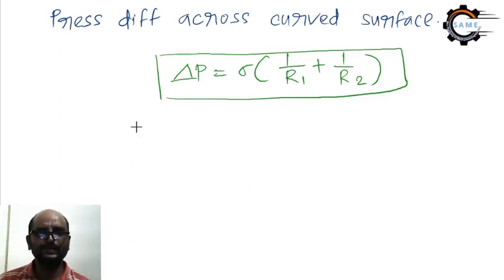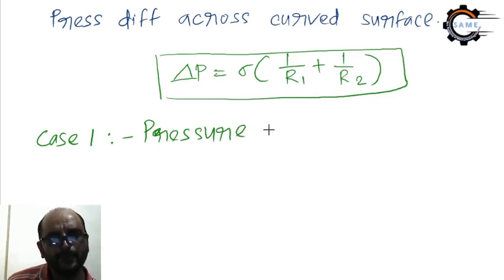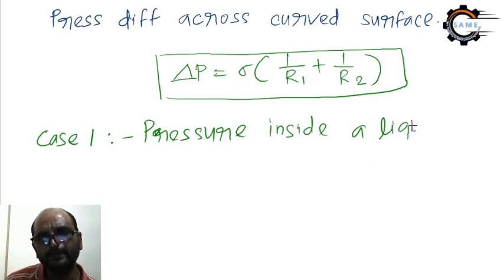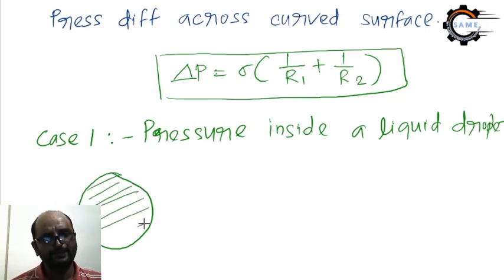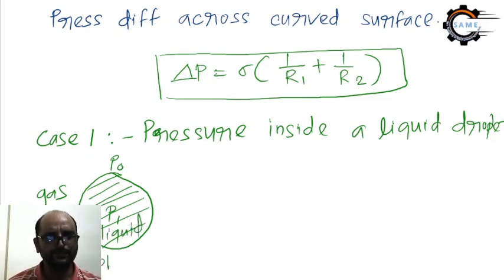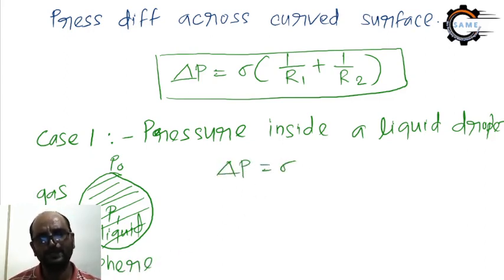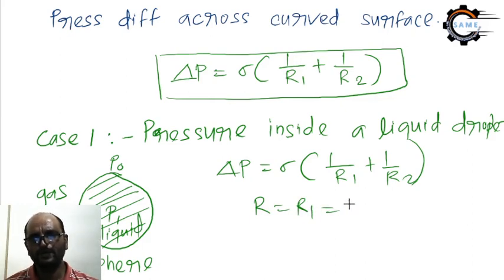Now we will see the cases. Case 1: the pressure inside a liquid droplet. The liquid droplet looks like a sphere. The pressure inside is P1 and outside is P0 — outside there is gas, inside there is a sphere of liquid. Writing the equation: ΔP = σ(1/R1 + 1/R2). In the sphere case, R1 = R2 = R.